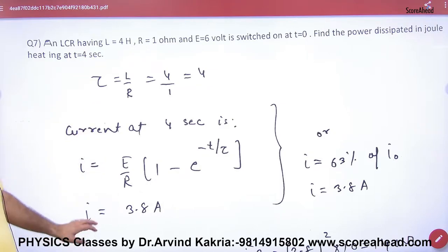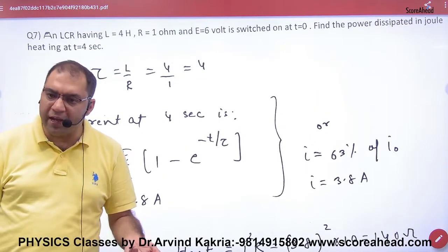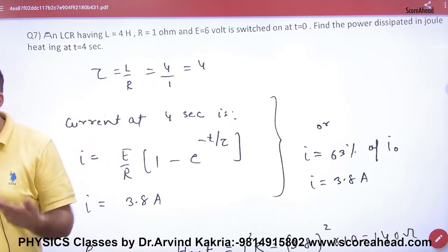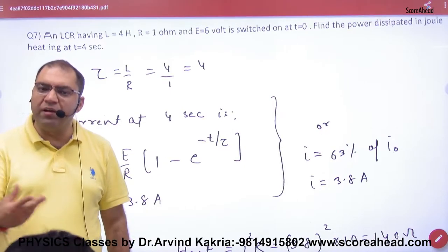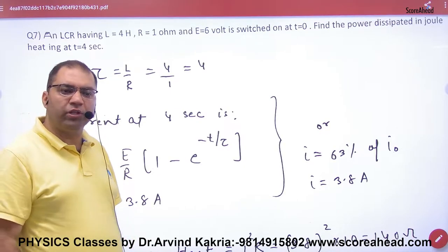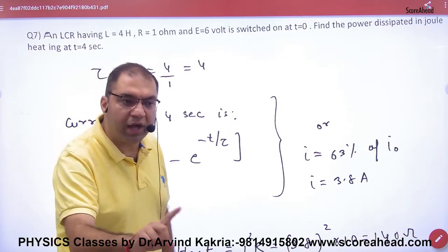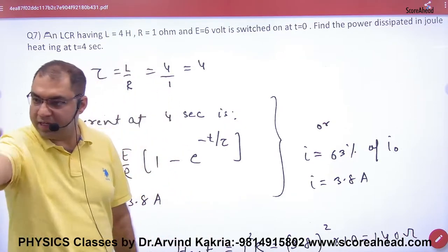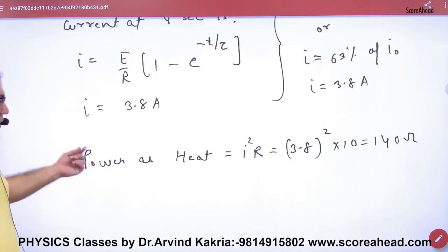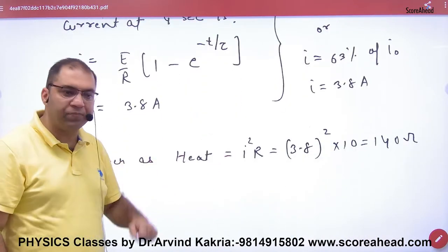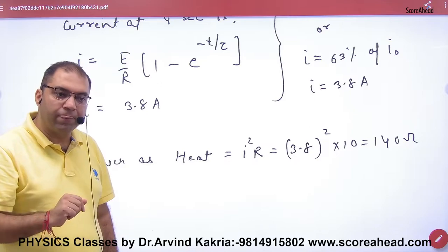Let me explain: for both LR and LCR questions, the machines react differently. For power dissipation, we use I²R — not I²Z. Power is only dissipated in R. So once you have the current I, the answer is I²R.